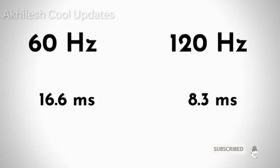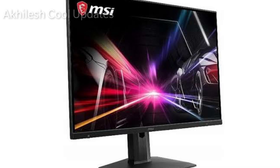Here, a 60 Hz display versus a 120 Hz display — the visuals are smoother on 120 Hz. Why? Because the 60 Hz speed refresh rate is slower.